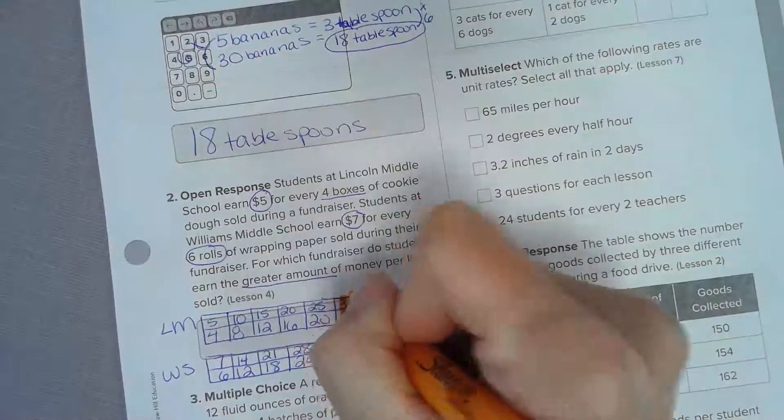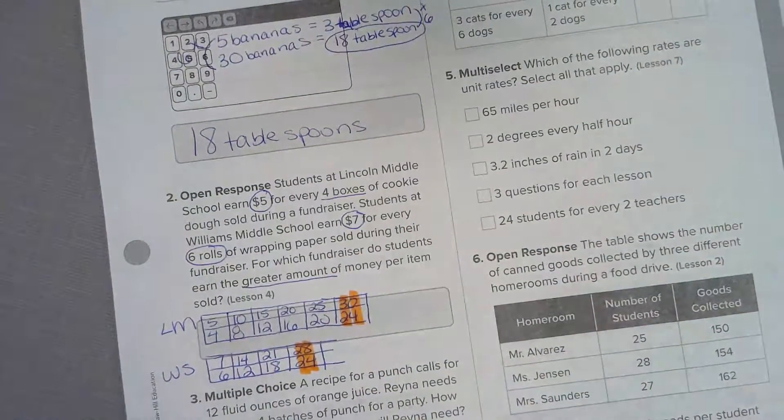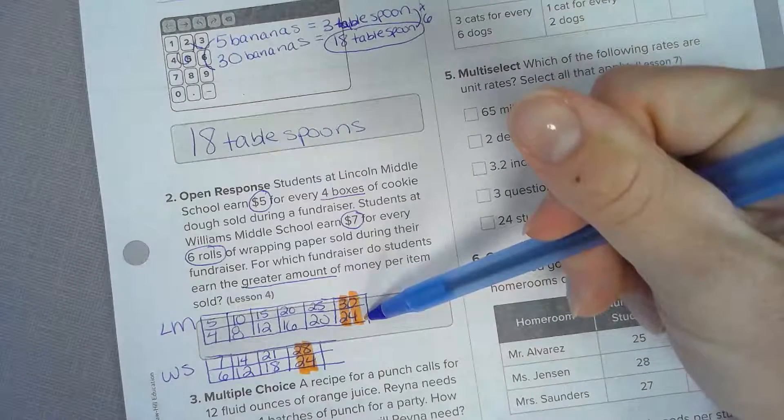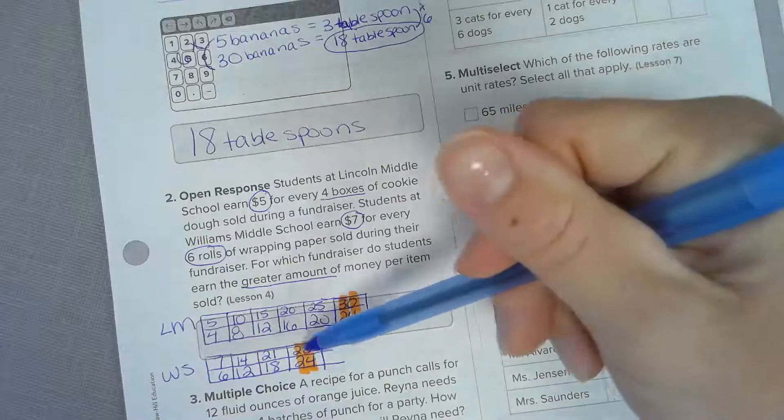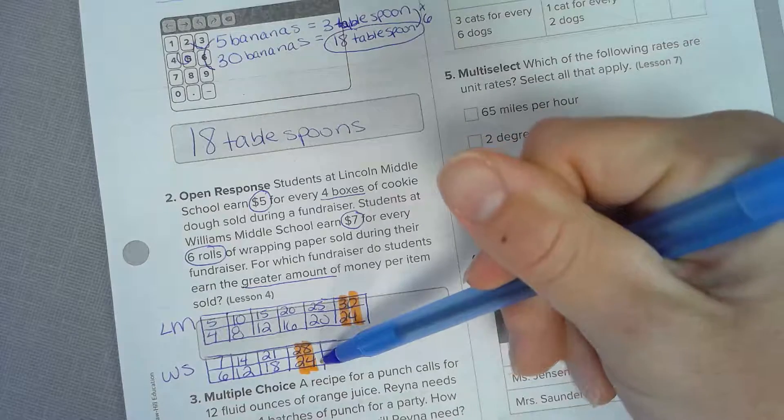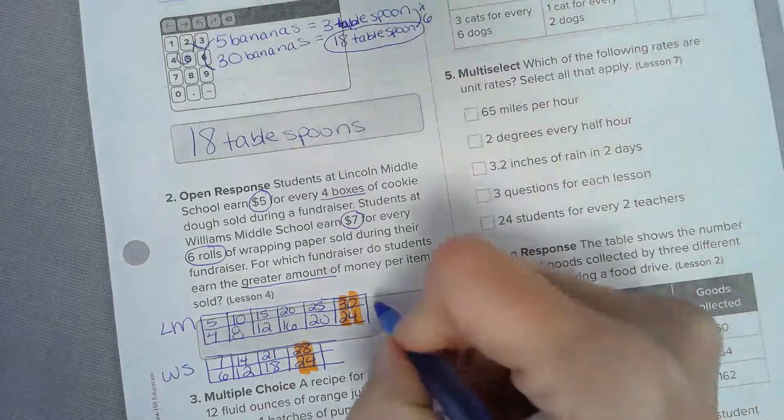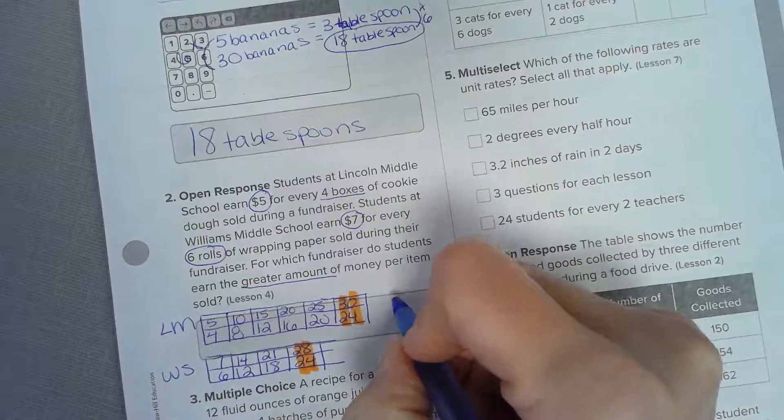And then sevens down here: seven, fourteen, twenty one, twenty eight. We're comparing when they're the same. Lincoln Middle School made thirty dollars after selling twenty four cookie doughs compared to the other school which made twenty eight dollars for selling the same amount of product. So cookie dough is greater.